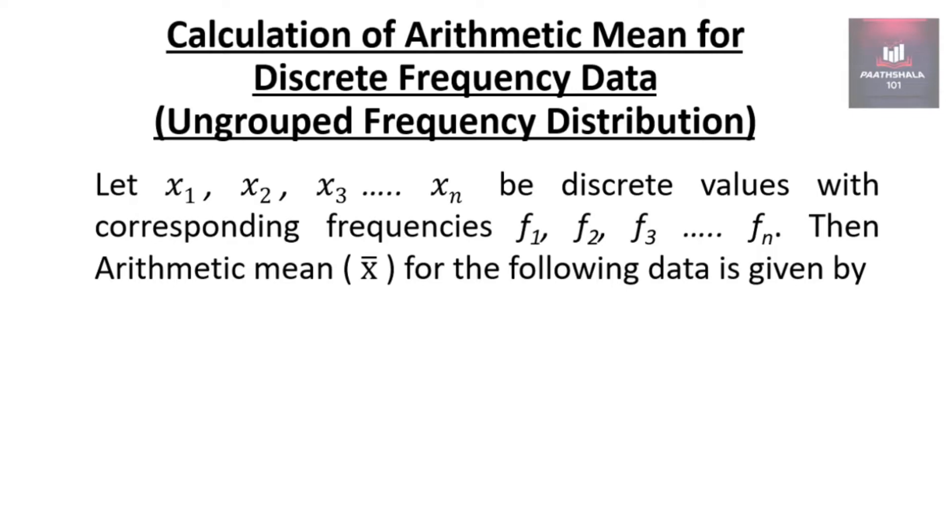Then the arithmetic mean for the following data is given by x bar equal to f1 x1 plus f2 x2 plus f3 x3 dot dot dot till fn xn divided by n, as there are n entries. So we can write it as x bar equal to summation of fx divided by n.